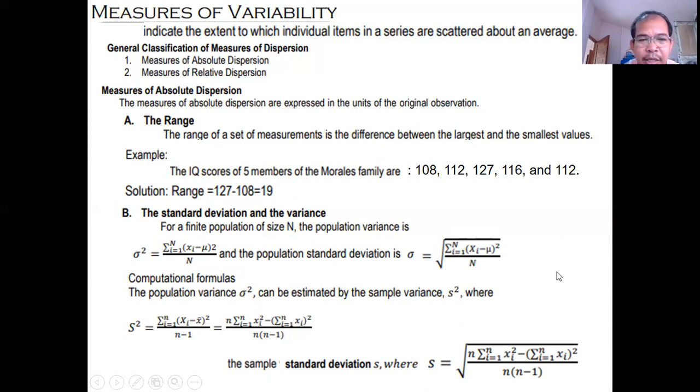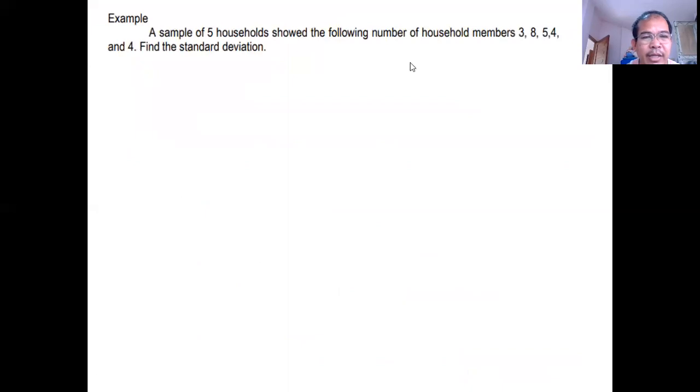Now how to interpret standard deviation and variance. The smaller the value of the variance or standard deviation, the lesser the variability of the individual items in the given set of data about an average. Of course, the greater the value, the greater the variability or the dispersion. Let's have an example.